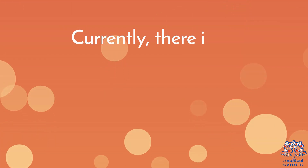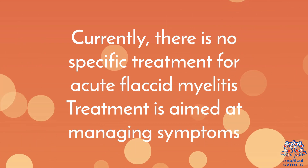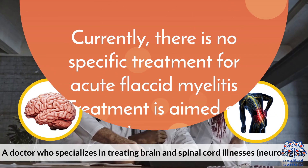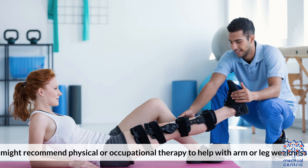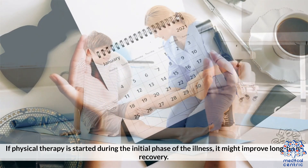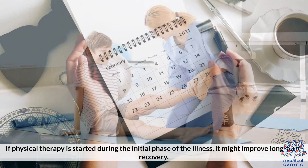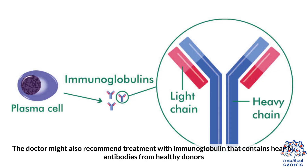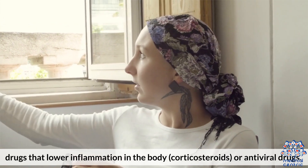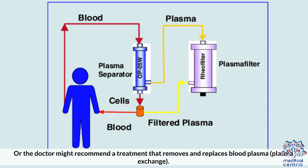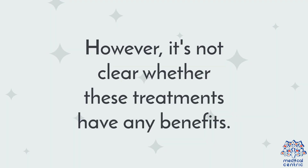Currently, there is no specific treatment for acute flaccid myelitis. Treatment is aimed at managing symptoms. A neurologist might recommend physical or occupational therapy to help with arm or leg weakness. If physical therapy is started during the initial phase of the illness, it might improve long-term recovery. The doctor might also recommend treatment with immunoglobulin containing healthy antibodies from healthy donors, corticosteroids to lower inflammation, antiviral drugs, or plasma exchange — a treatment that removes and replaces blood plasma. However, it is not clear whether these types of treatments have any benefits.